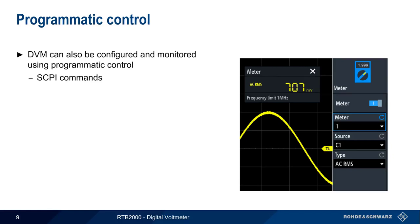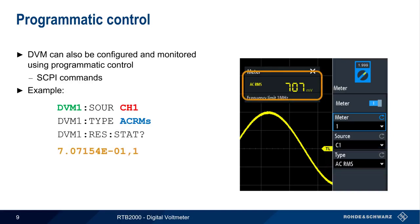The RTB2000's DVM functionality can also be configured and monitored using programmatic control, more specifically by means of industry-standard SCPI commands. For example, we could send this command to the RTB to assign meter 1 to channel 1. Another command could be used to change the meter type to AC RMS. A third command could then be sent to query the measured value, which is then returned in scientific notation. In this presentation, we won't get into details of programmatic control, so please see the RTB user manual for examples and a complete programming reference.